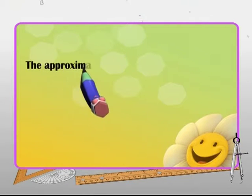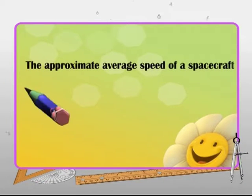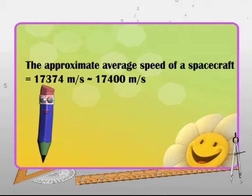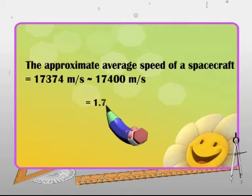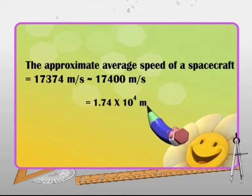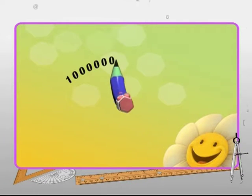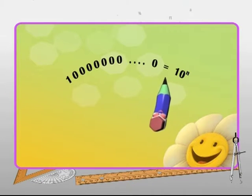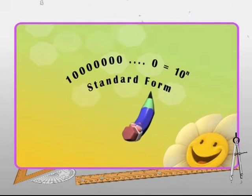The approximate average speed of a spacecraft, which can be approximated to 17,400, can be expressed in standard form as 1.74 into 10 raised to the power of 4 meters per second. This general format of expressing numbers as multiples of powers of 10 is known as standard form or scientific notation.